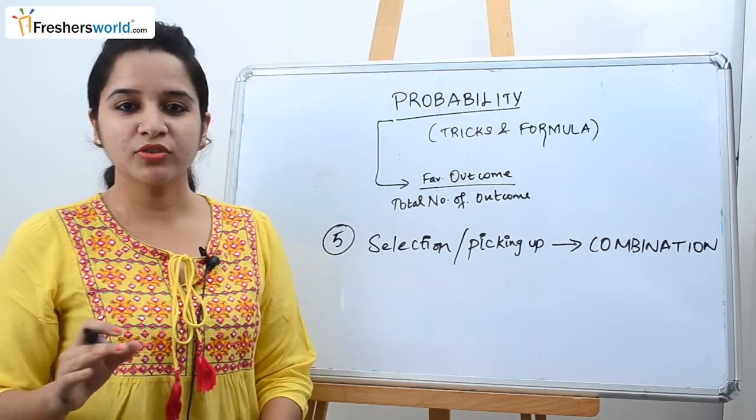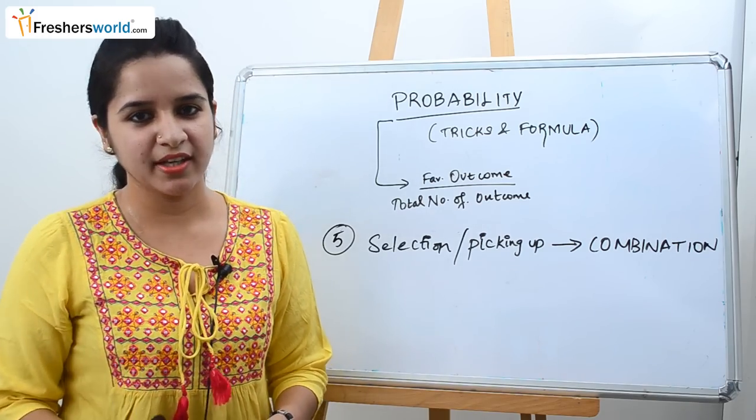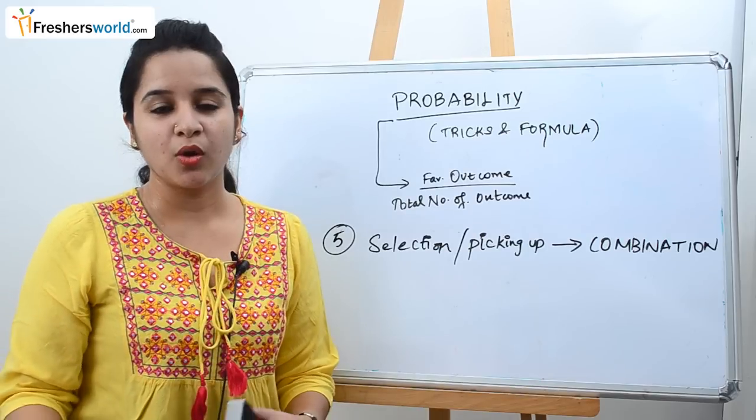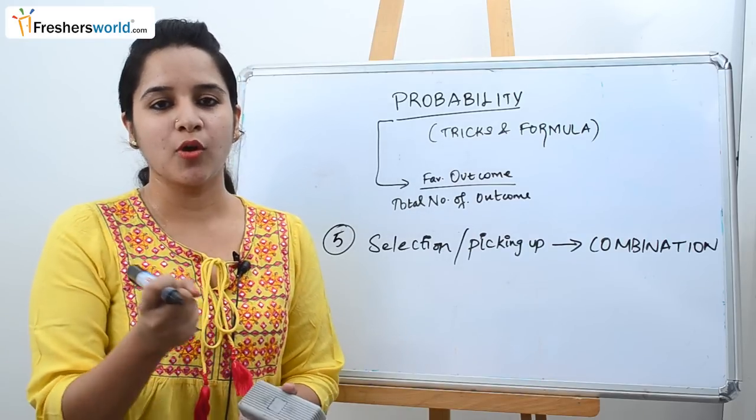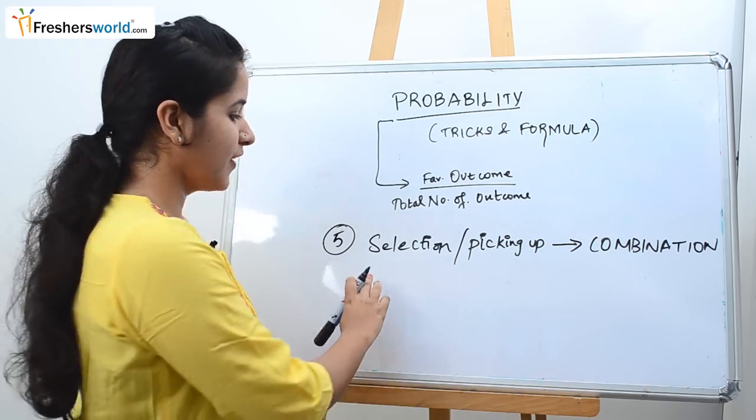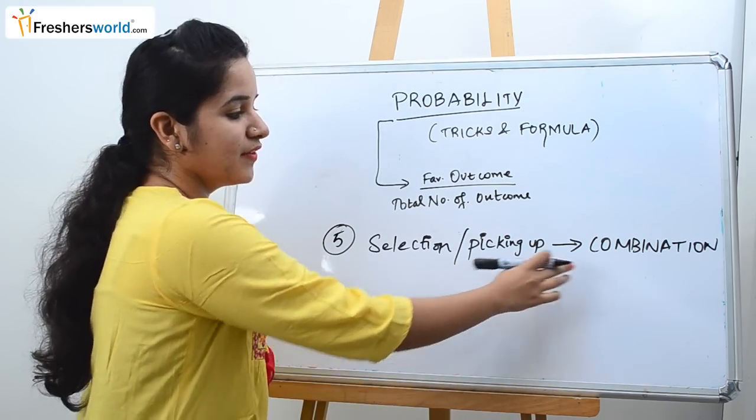So this is the most common question nowadays you face in aptitude exams. Selecting two balls out of three, picking up of two balls from a bag. So if you find these kinds of questions you should always use combination.